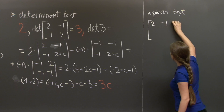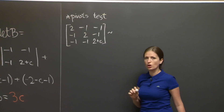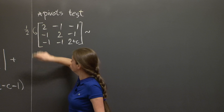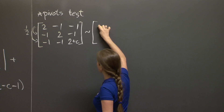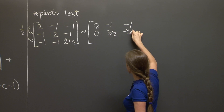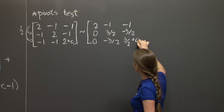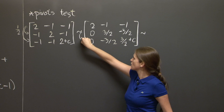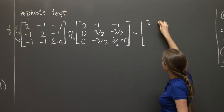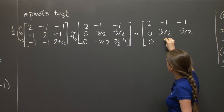So we take our matrix B: 2, -1, -1, -1, 2, -1, -1, -1, 2+c. Let's pretend we're solving a system that has this as a matrix. We multiply the first row by 1/2 and add it to the second and third rows. We get: 2, -1, -1 / 0, 3/2, -3/2 / 0, -3/2, 3/2+c. The first column is good. Then we replace the third row with the third row plus the second row, and we get: 2, -1, -1 / 0, 3/2, -3/2 / 0, 0, c.